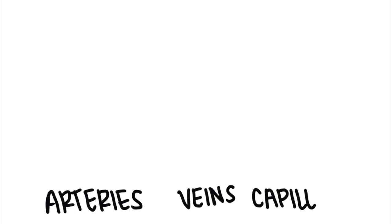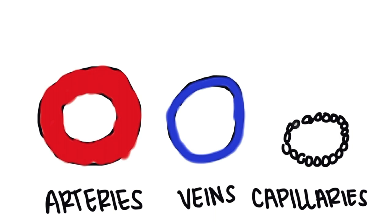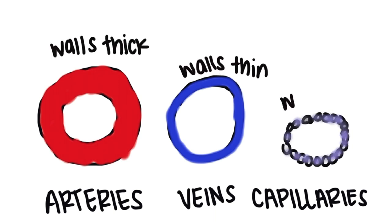The easiest way to tell the difference between these three types of blood vessels is to look at the walls of the vessel. Arteries are the thickest, veins are thin, but capillaries are extremely thin — only one cell wide.